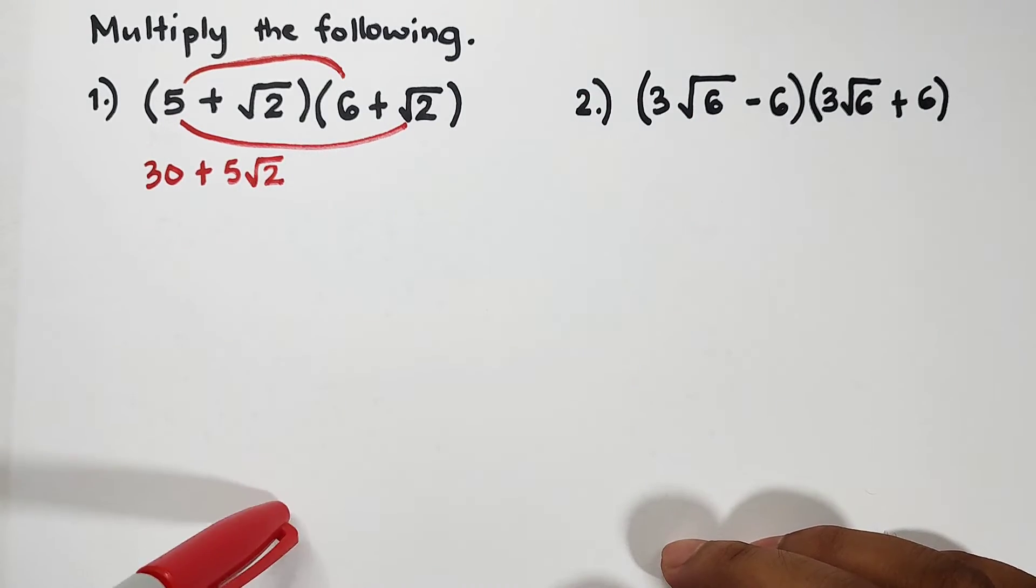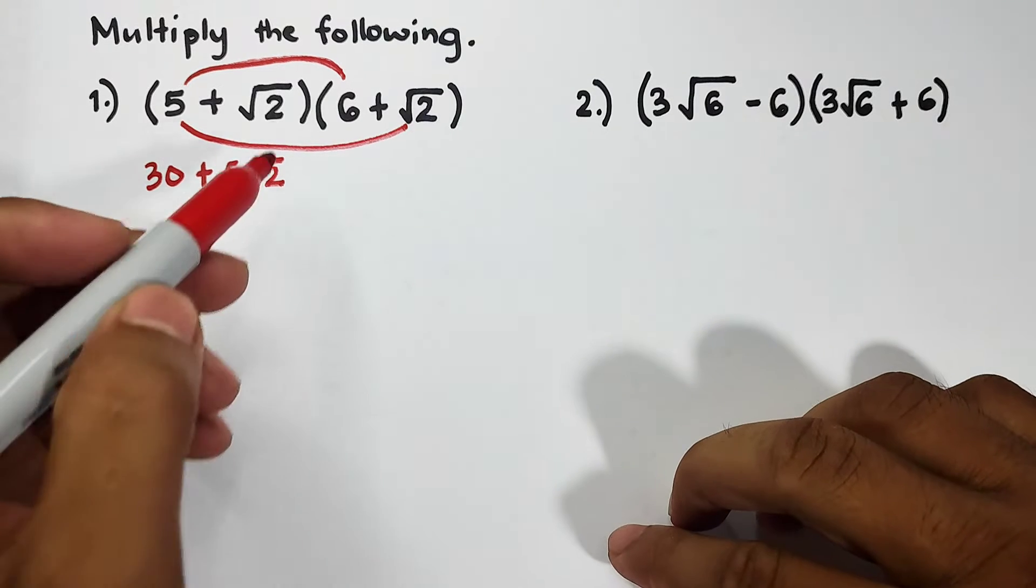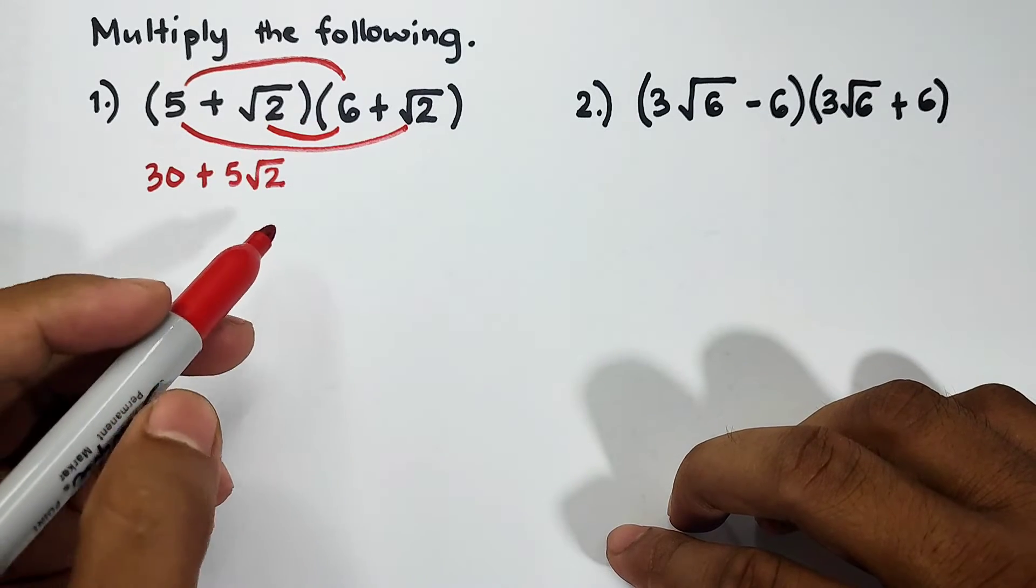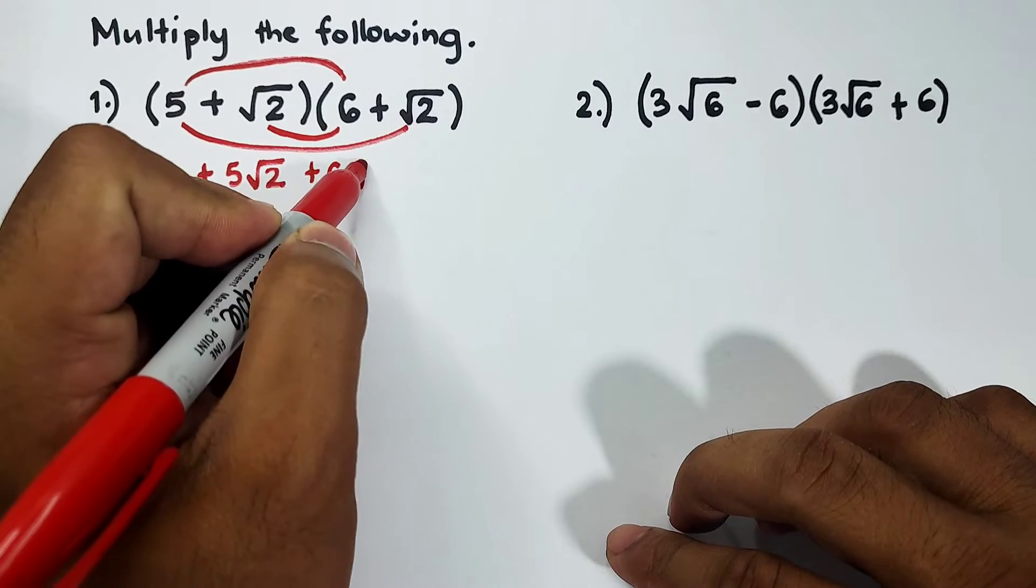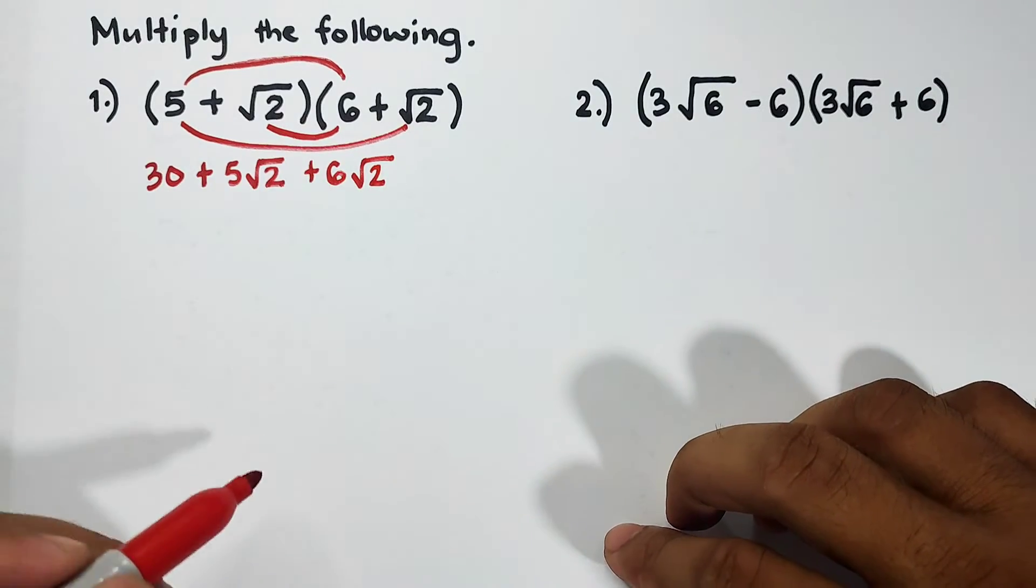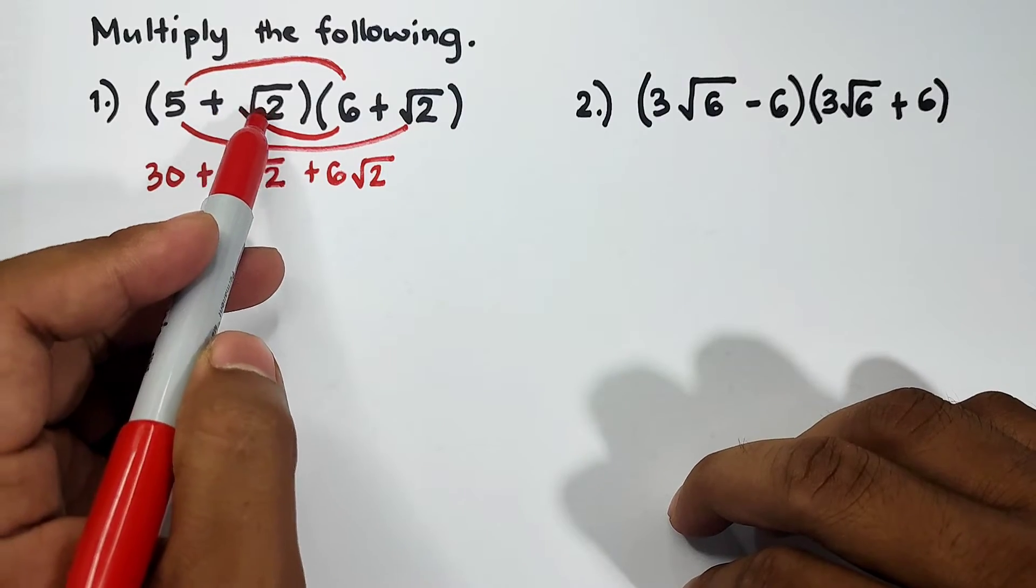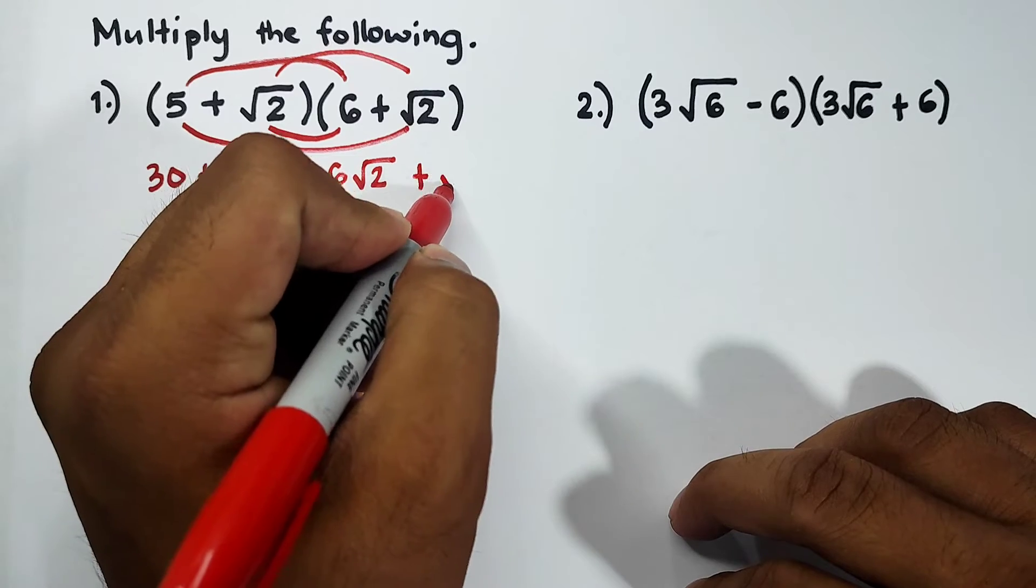Next is the inner terms: square root of 2 and 6, and that is plus 6 square root of 2. And lastly, for the last terms, that is square root of 2 times the square root of 2, and that would be plus the square root of 4.